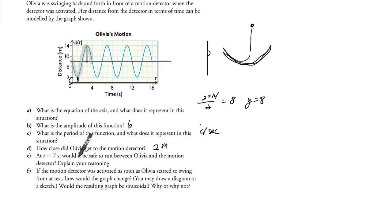At 7 seconds, would it be safe to run between Olivia and the motion detector? So 7 is right here and it's actually 14 meters away. Okay, so yes it's safe. That's actually the maximum distance between the detector and Olivia.